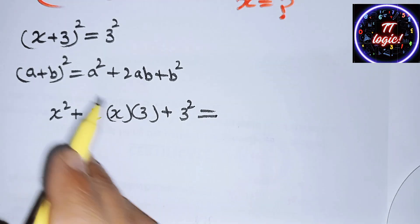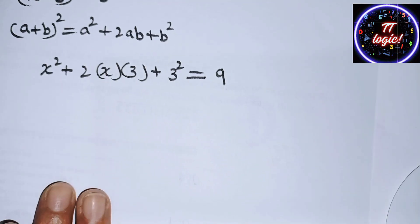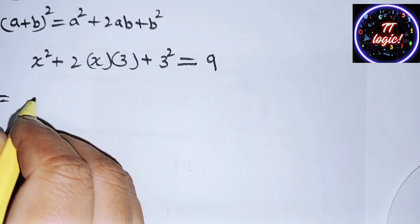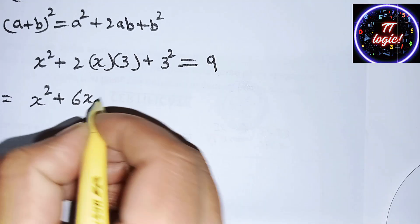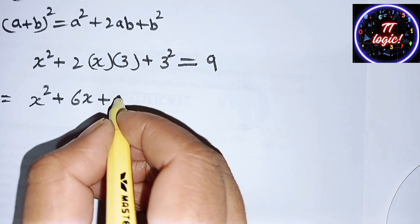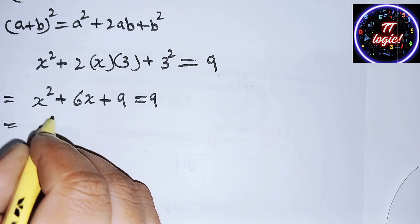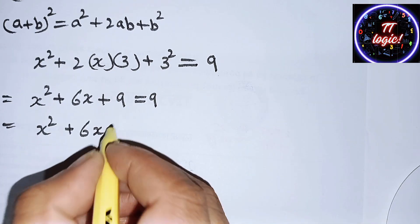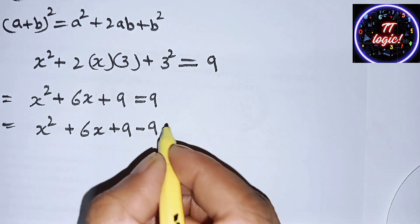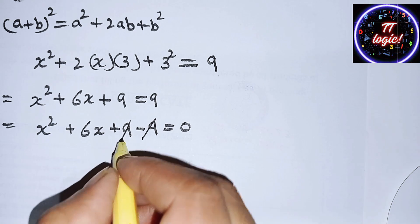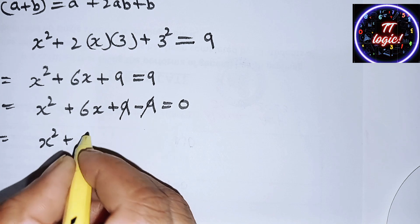Then plus b² which is 3², and 3² equals 9. So we get x² + 2×3×x + 3² = 9, which gives us x² + 6x + 9 = 9. Moving the 9 to the other side gives x² + 6x + 9 − 9, and the 9s cancel out.